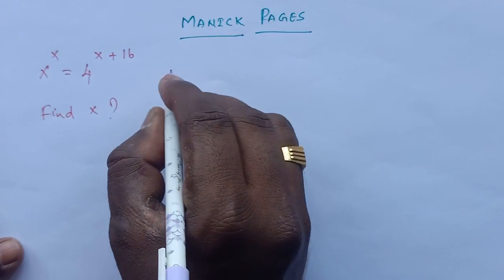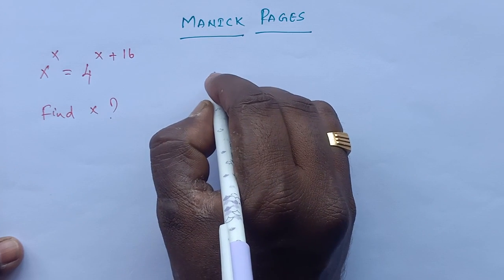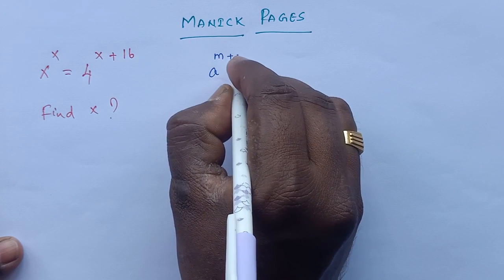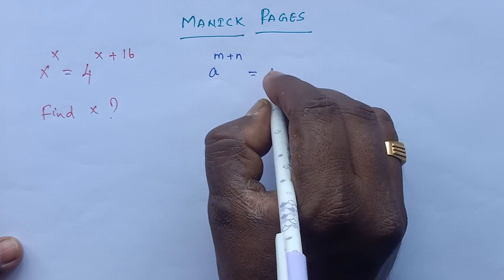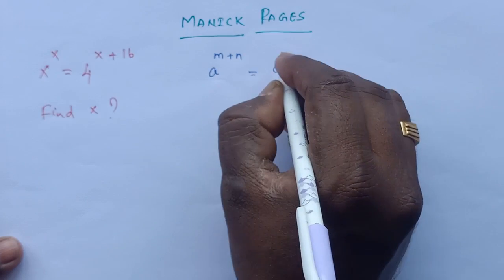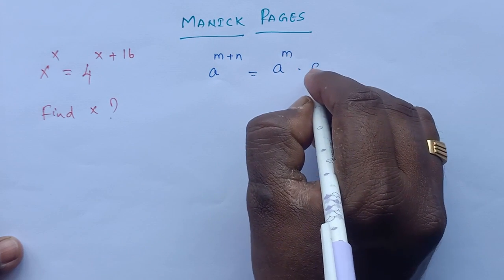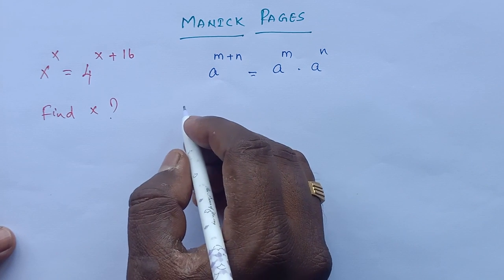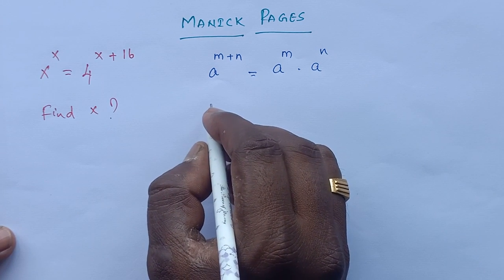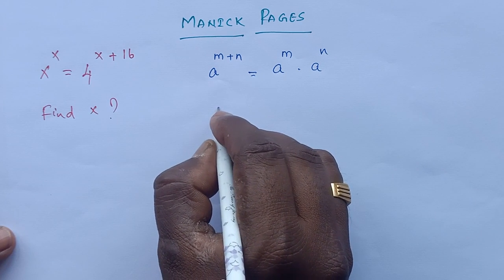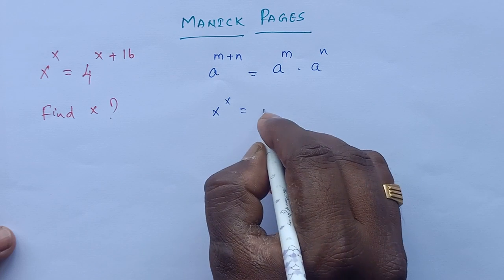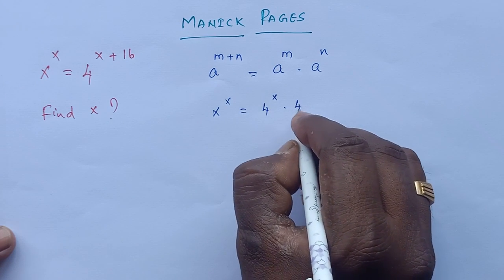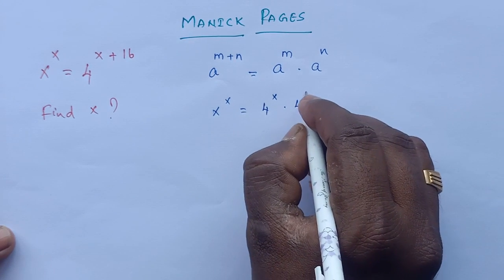We know the property: a raised to the power (m plus n) is equal to a raised to the power m, multiplied by a raised to the power n. By applying this property, we can write x^x is equal to 4 raised to the power x, multiplied by 4 raised to the power 16.